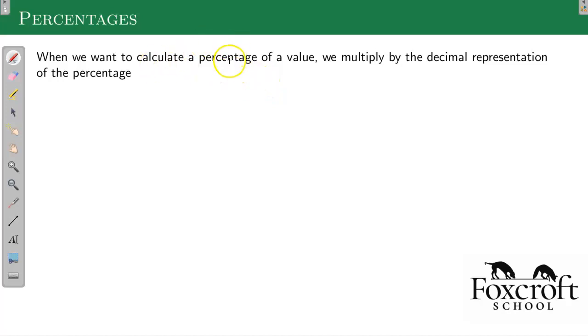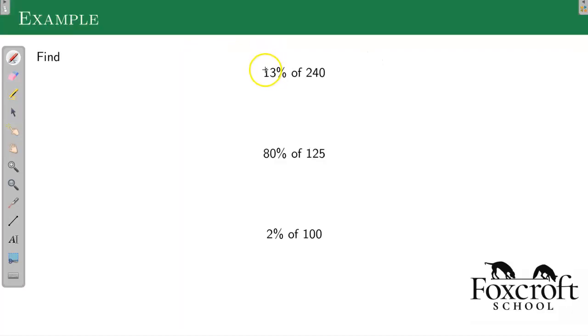So when we want to calculate a percentage of a value, we multiply by the decimal representation of that percentage. So I'm going to find 13% of 240. 13% as a decimal, I move the decimal point over, that's 0.13 times 240. Not something I would expect you to be able to do in your head, so I just put it in a calculator. You get 31.2. 80% of 125 is 0.8 times 125. I think this one is 100. It is 100.